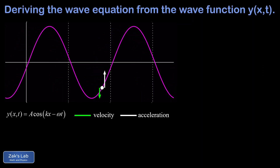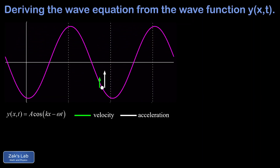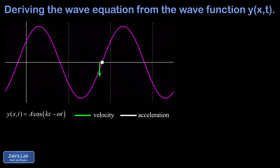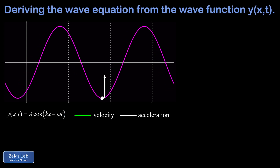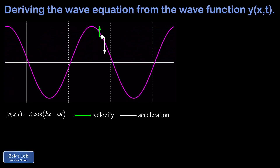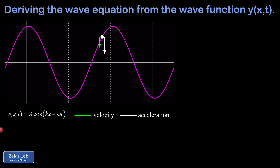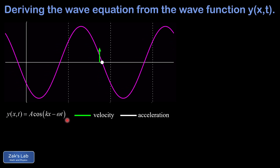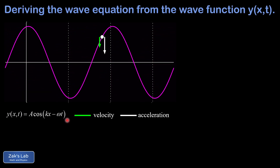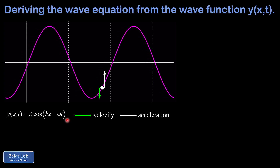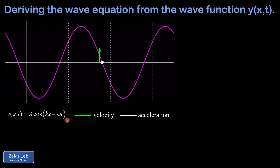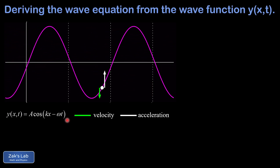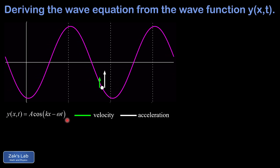This video is the second in a short series on the mathematics of waves. In the first video we derived an equation for the wave function for a sinusoidal wave moving on a string. The wave function turned out to be y of x and t equals a cosine of the quantity kx minus omega t for a wave moving to the right. In this video we start taking partial derivatives of this wave function, interpret their physical meaning, and arrive at the one-dimensional wave equation, which is a second order partial differential equation governing the motion of waves on a string.